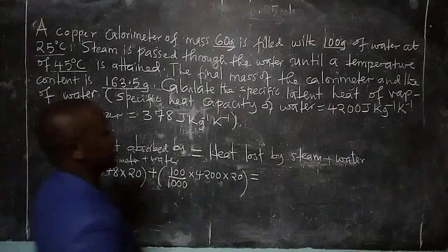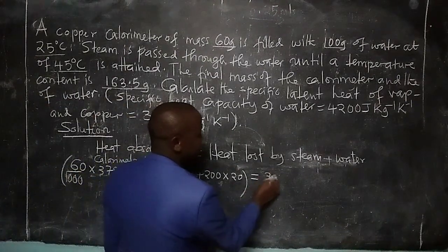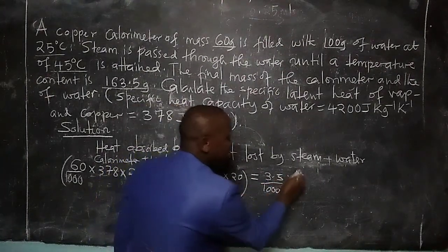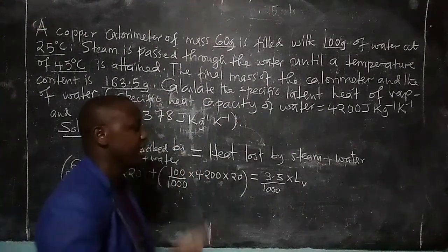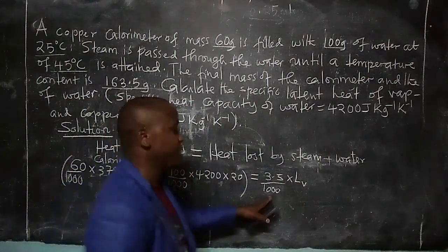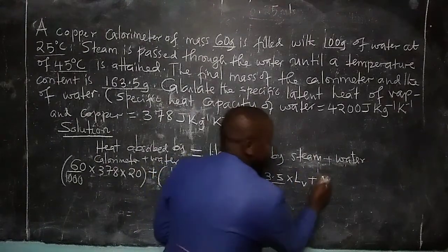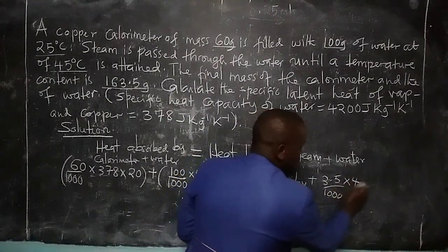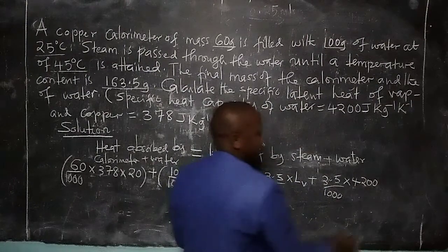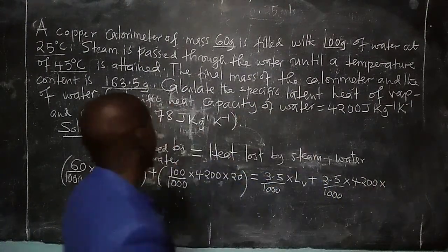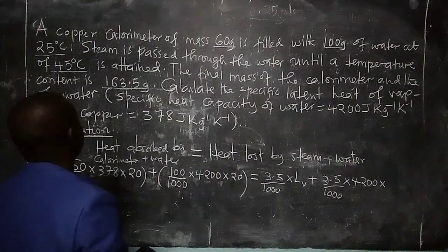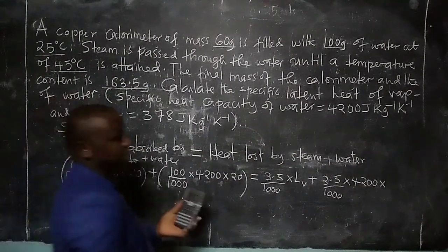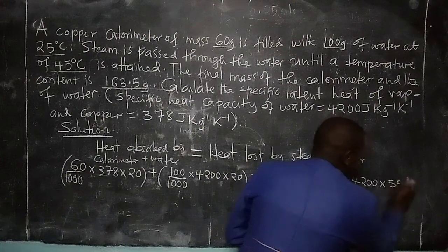Latent heat of vaporization is given by mass of condensed steam — 3.5 divided by 1000 kilograms — multiplied by the unknown latent heat of vaporization L, at constant temperature as it becomes liquid. Then the 3.5 grams of water also loses heat through specific heat capacity of 4200, dropping from 100 degrees Celsius down to 45 degrees, a drop of 55 degrees.